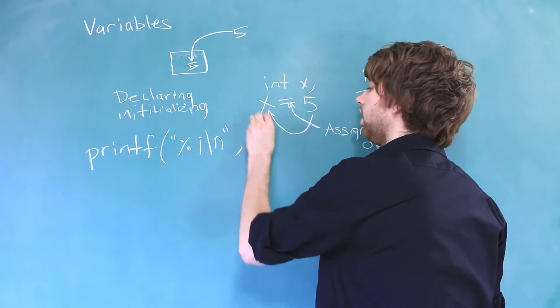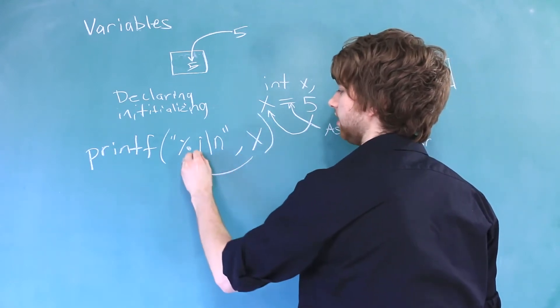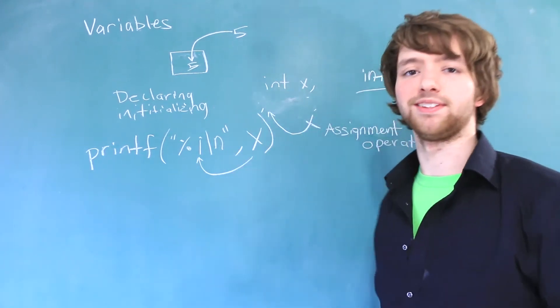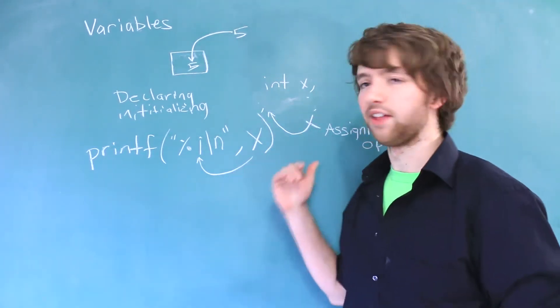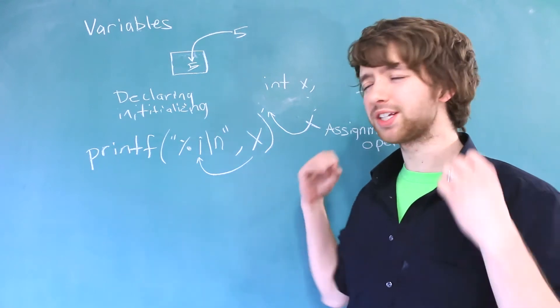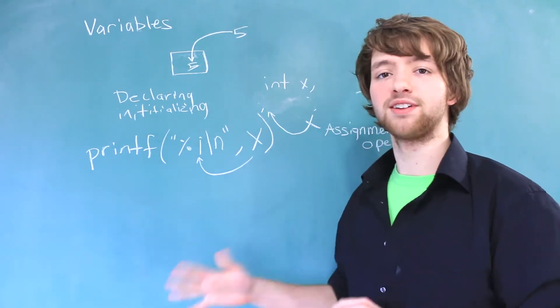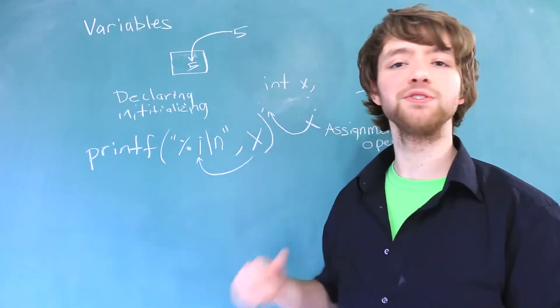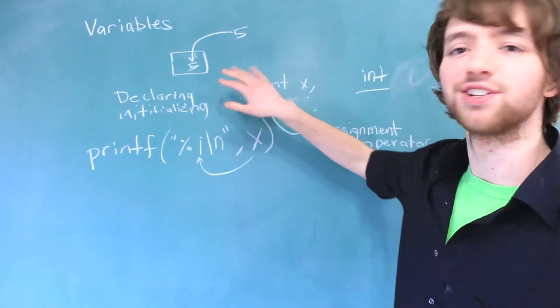So you can see here, we are outputting x and a new line. But if we never initialize this, give this a try and see what happens. You'll quickly find out that uninitialized variables basically just output garbage. And that is not the kind of thing we want showing up in our application. So make sure you always, always, always remember to initialize your variable.